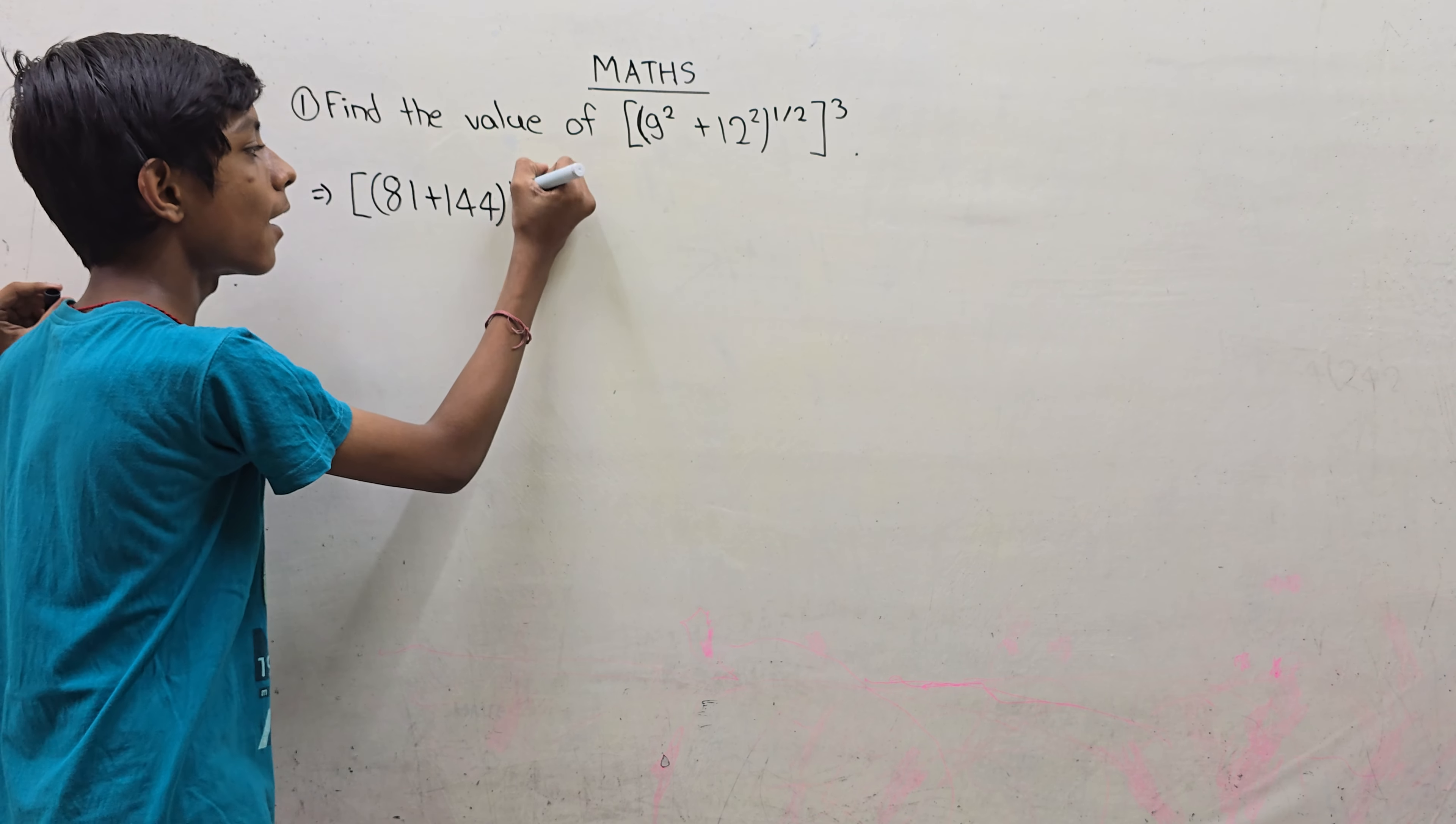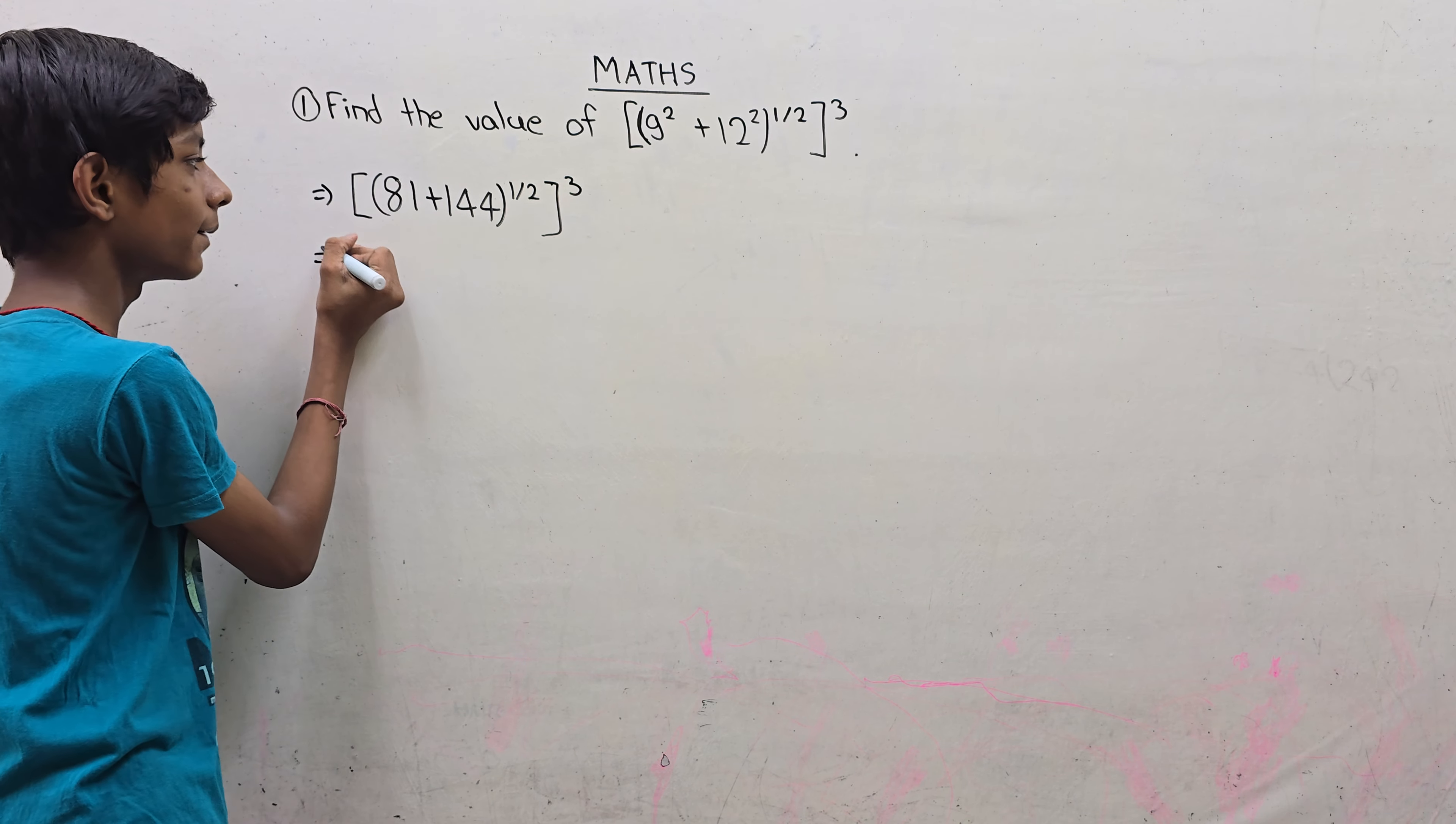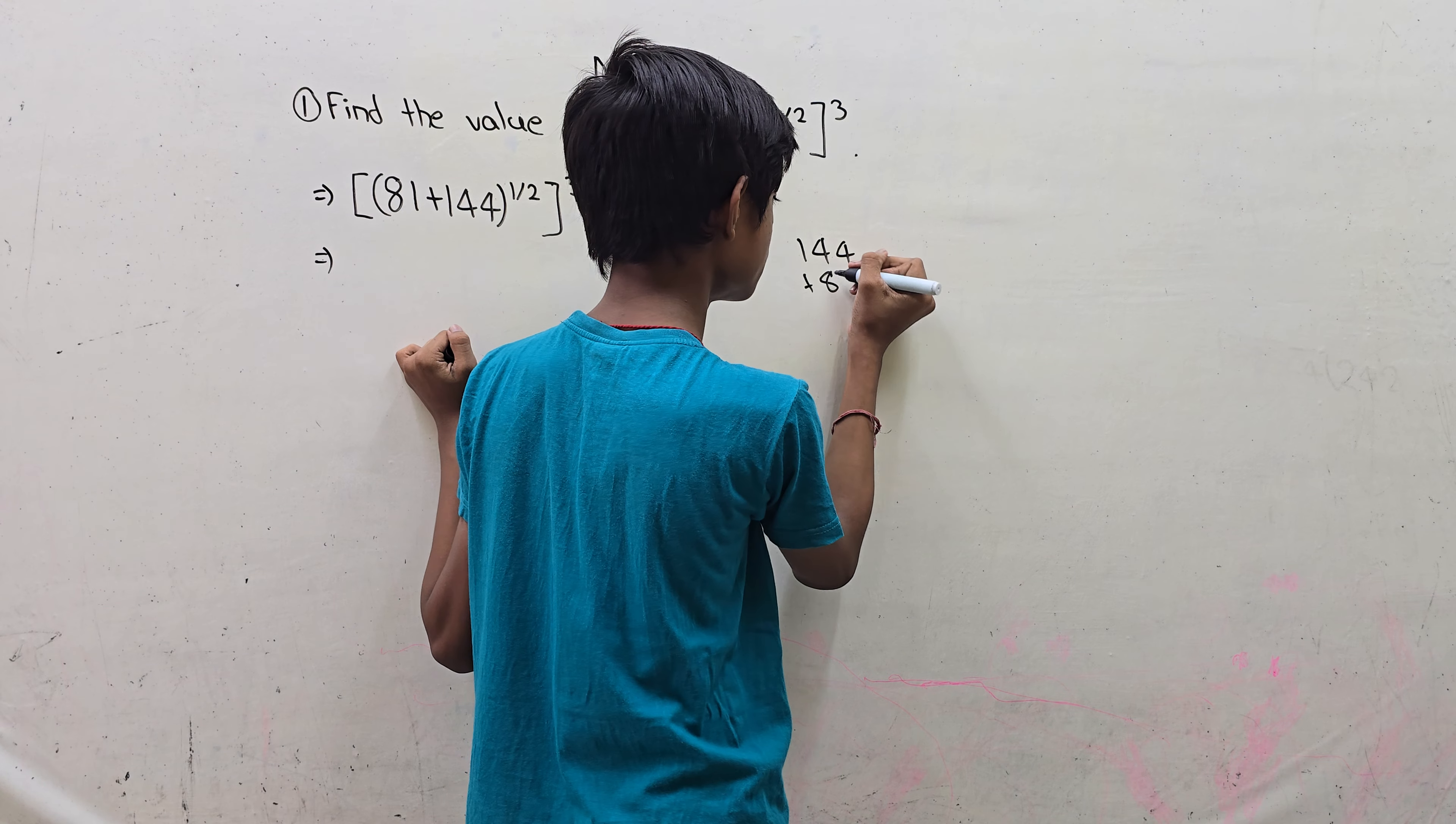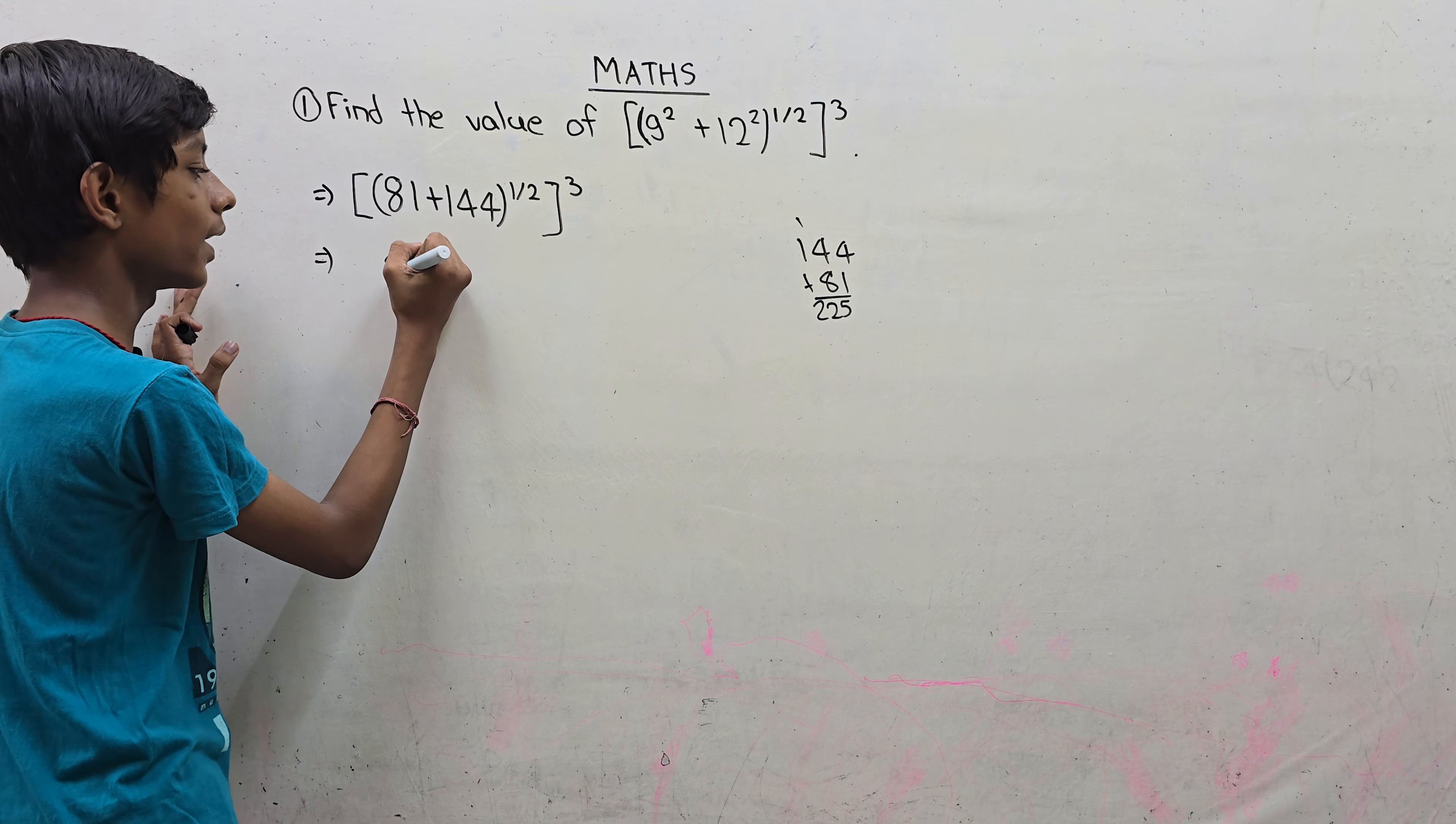Here we have raised to the power 1/2 raised to the power 3. Now we will write the value of 81 plus 144, which equals 225.